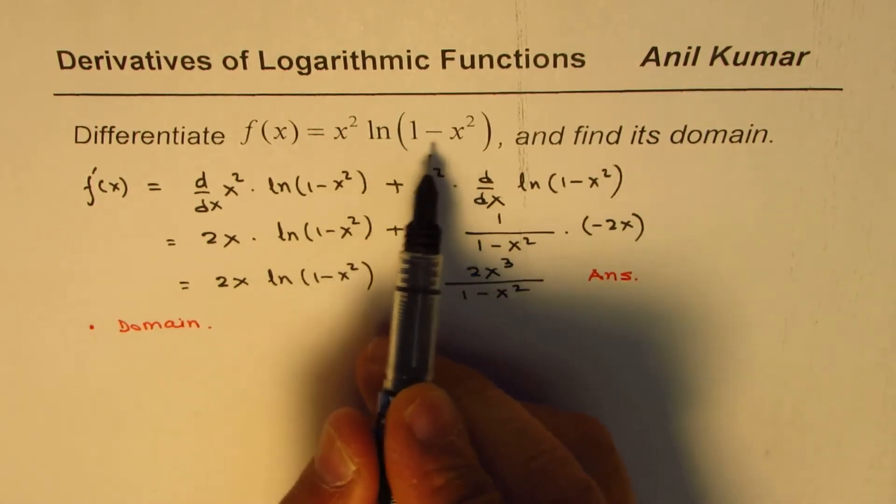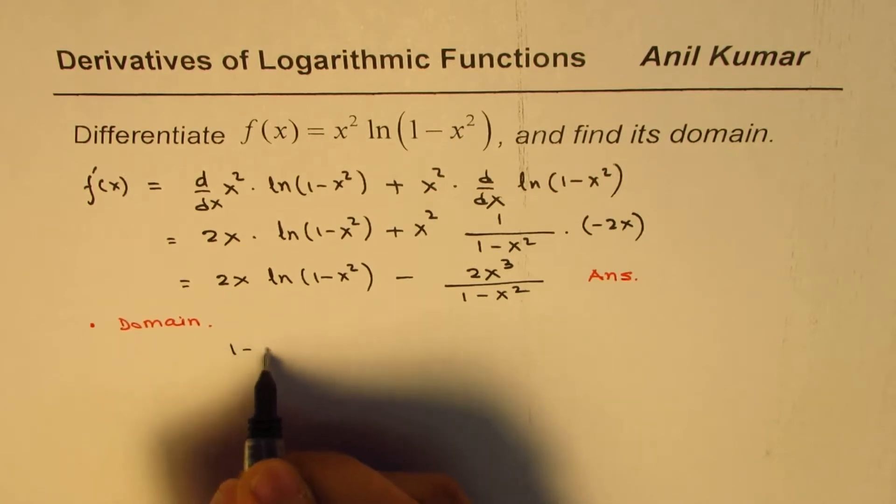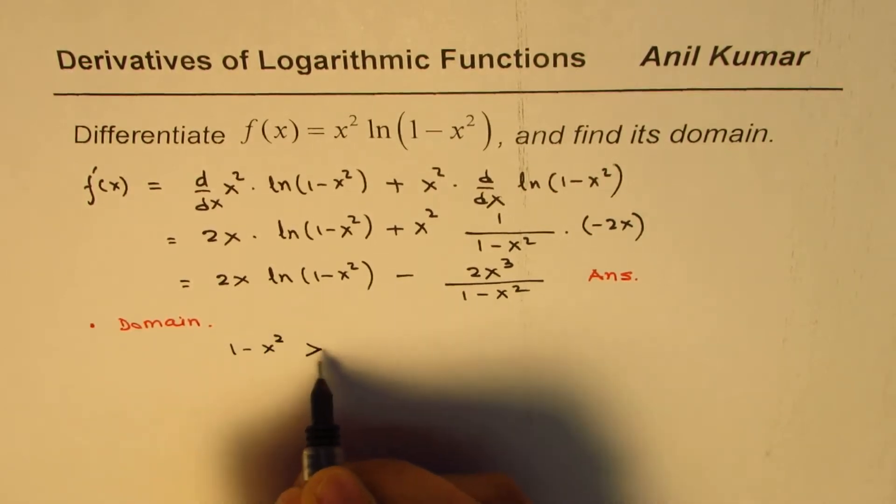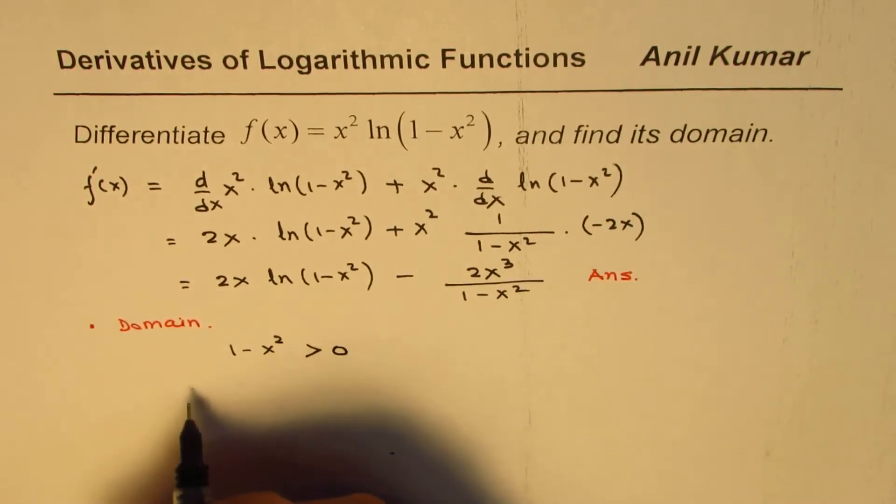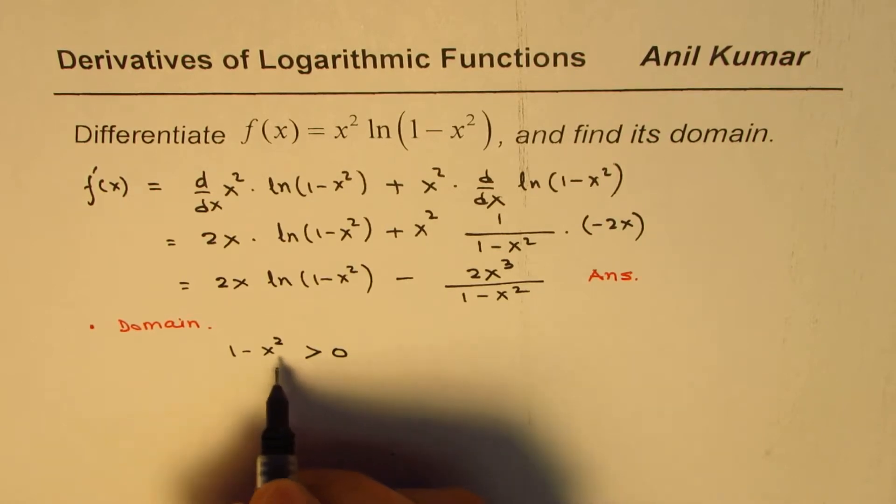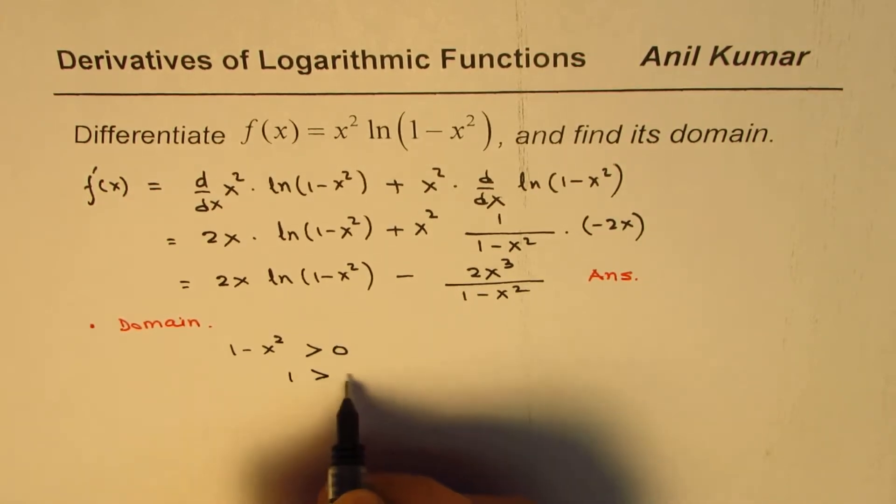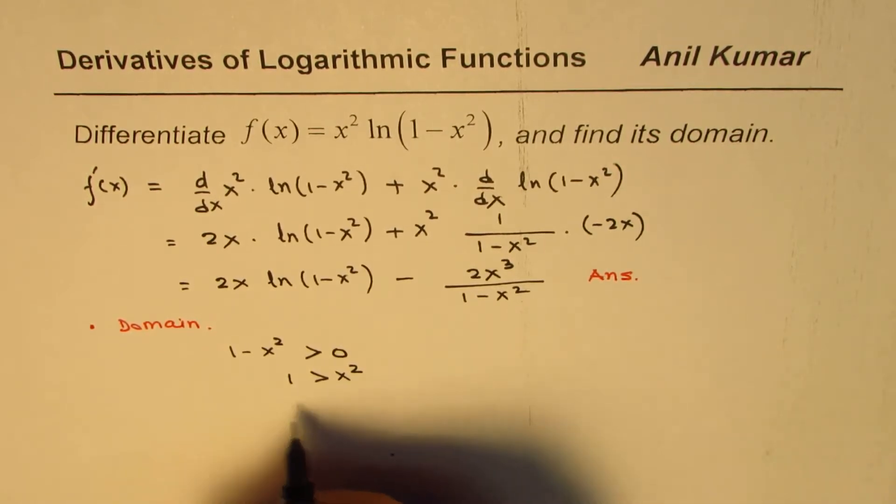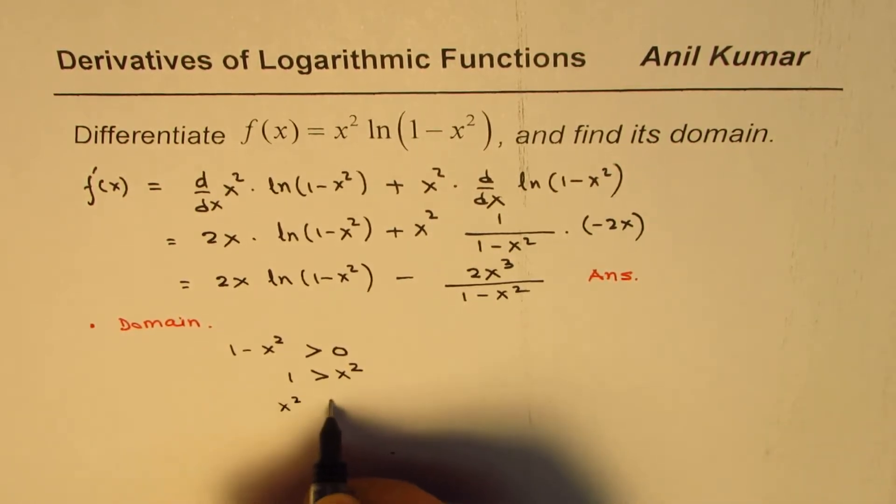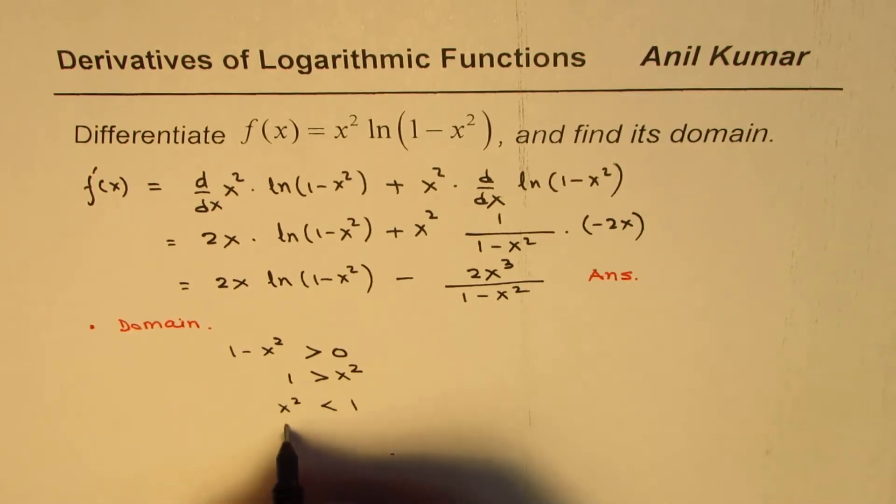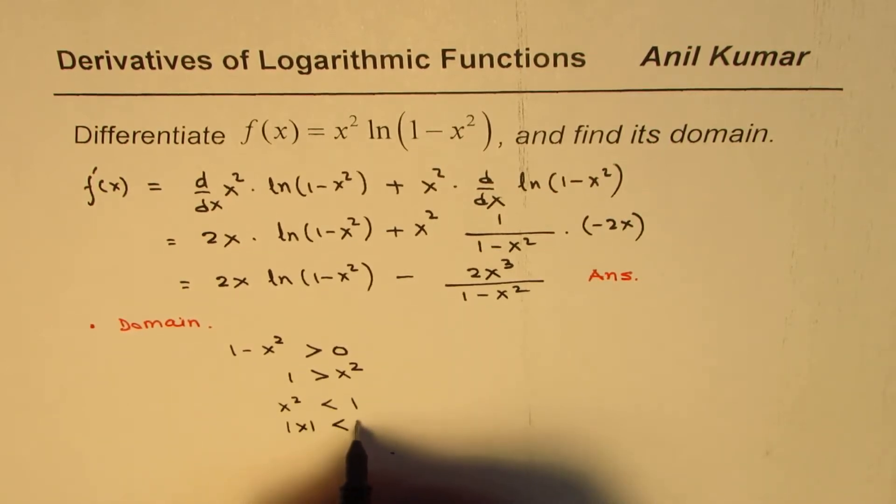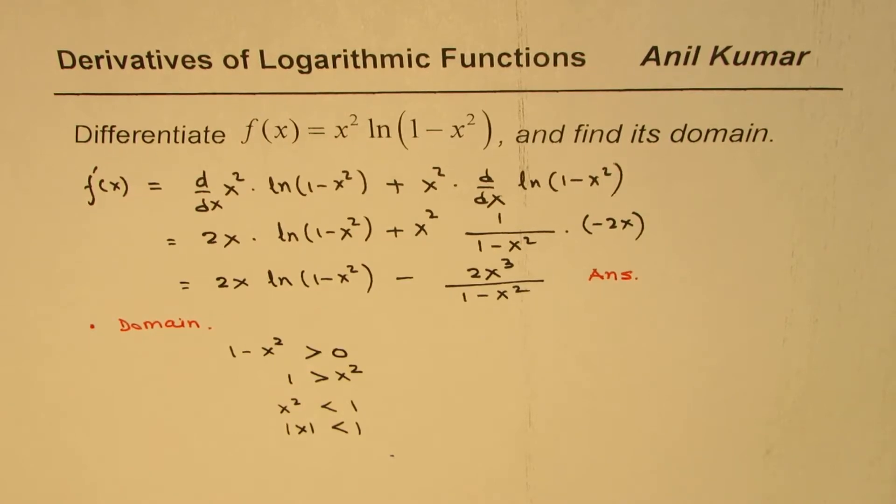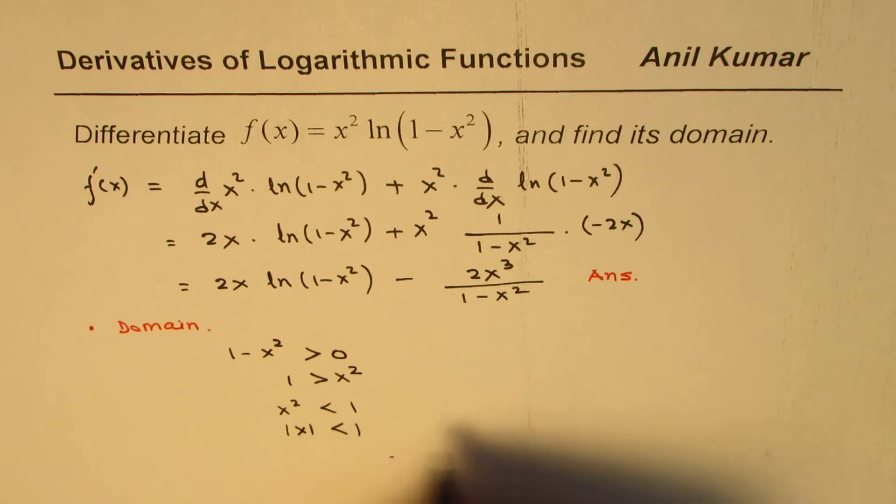logarithmic function is a restricted function, where 1 minus x squared should be greater than 0. So that is to say that 1 is greater than x squared. That is to say that x squared is less than 1 or absolute x is less than 1. So that means x is in between plus and minus 1. That gives you the restriction. So we can write down our answer for domain also.